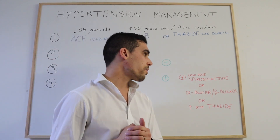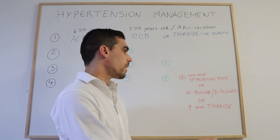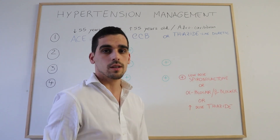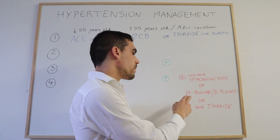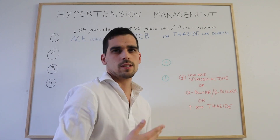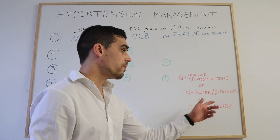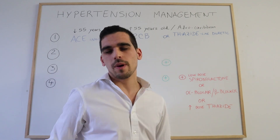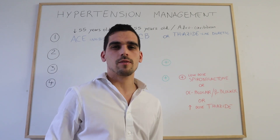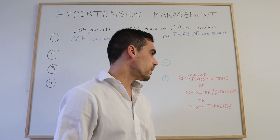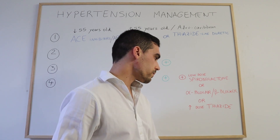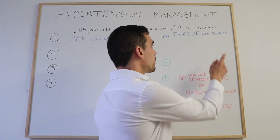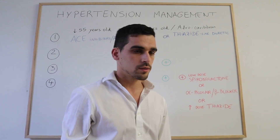The fourth drug added can be a low dose of spironolactone, or an alpha blocker such as doxazosin, or even a beta blocker — which may make particular sense for patients who also suffer from heart problems. Another option is to increase the dose of the thiazide-like diuretic.